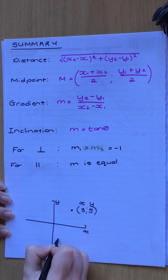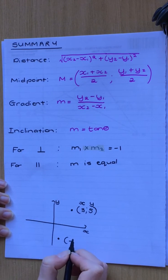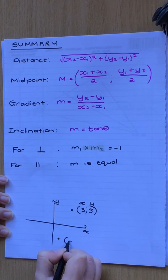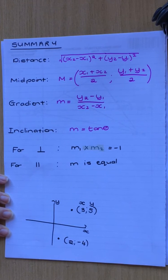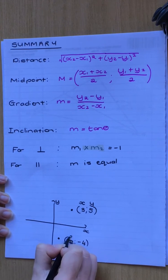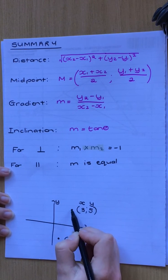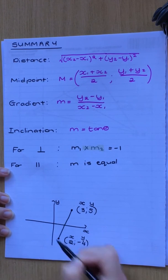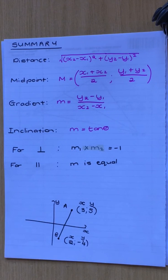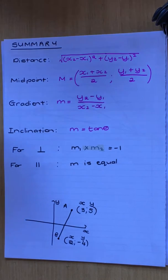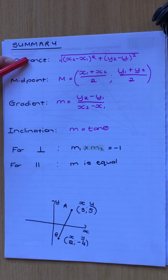Let's say over here I have a point negative 2 and negative 4. This is your x and that is your y. So if this is a line, let's say this is point A and that's point B. If they want the distance between point A and point B, you will use the distance formula.